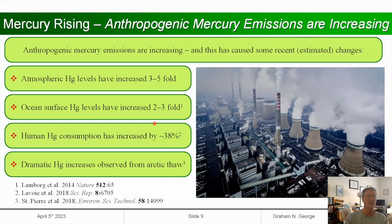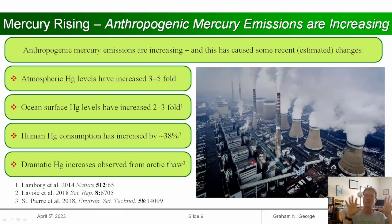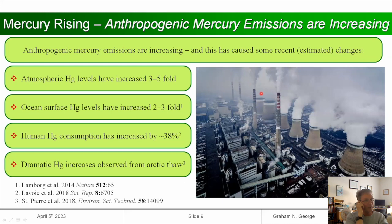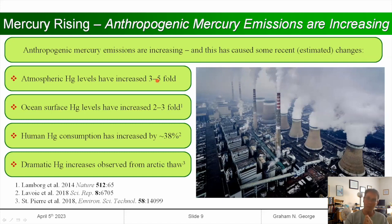This is a photo of the Kendal Power Plant, the world's largest coal-fired power plant. The official photo has been photoshopped with blue skies and a little puff of smoke, but this is how it really looks. It burns enormous amounts of coal and there are several plants of similar size in China and India. The reflection of this is that atmospheric mercury levels in recent years have increased three to five fold, though we don't really know exactly how much relative to pre-industrial times.